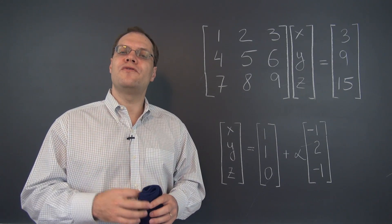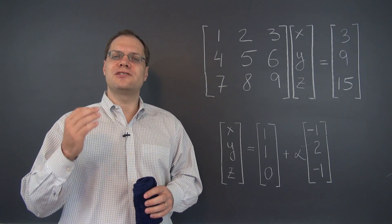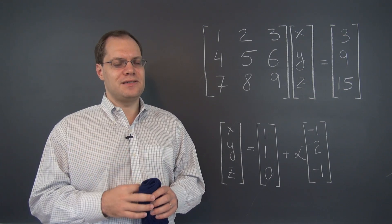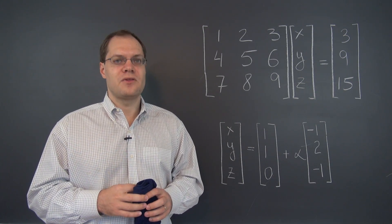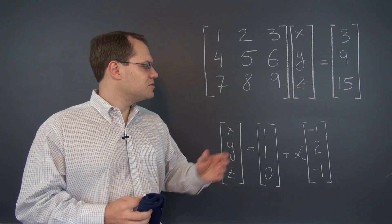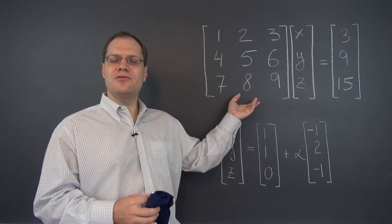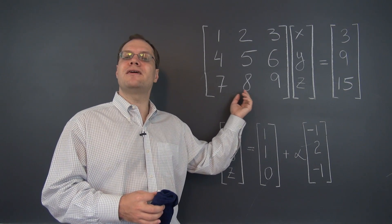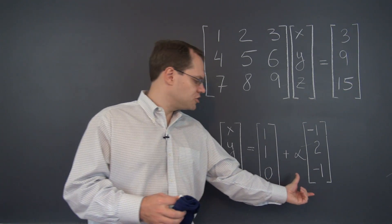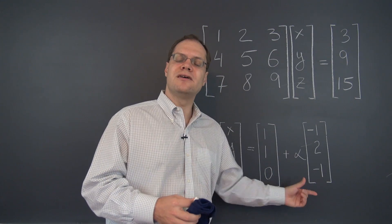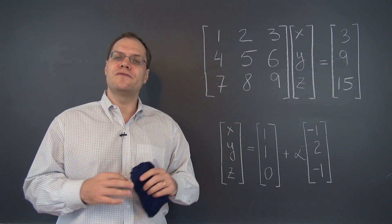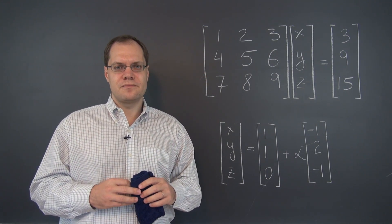Alright, we will now solve our very first linear system by Gaussian elimination. We're now armed with three row operations that don't change any of the relationships among the columns, and therefore don't change the particular solution or the null space. In other words, they preserve the solution set of the system.